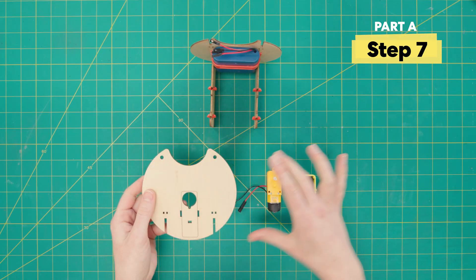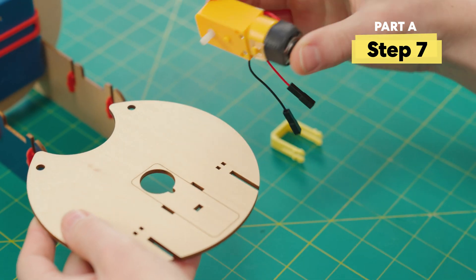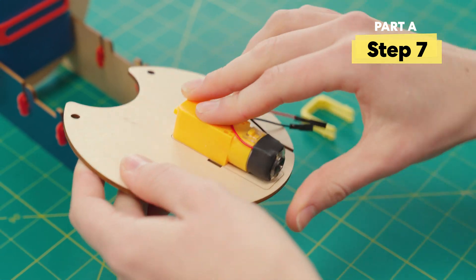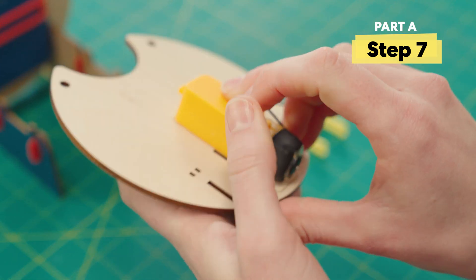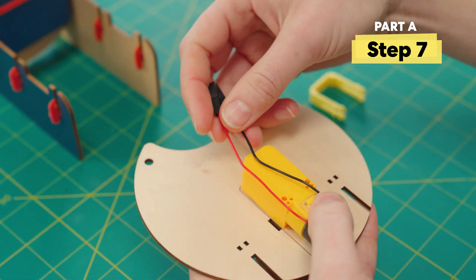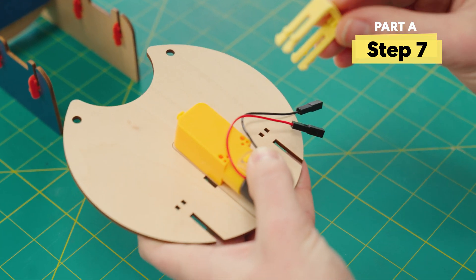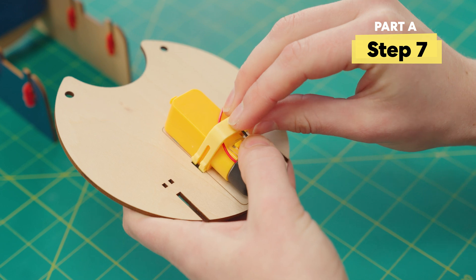Alright, next let's assemble the motor. So we're going to put it down like that and it'll register in this little hole right here. And then to clip it onto place, we'll use one of these yellow clips and make sure that the wires are underneath the clip. This is very important.